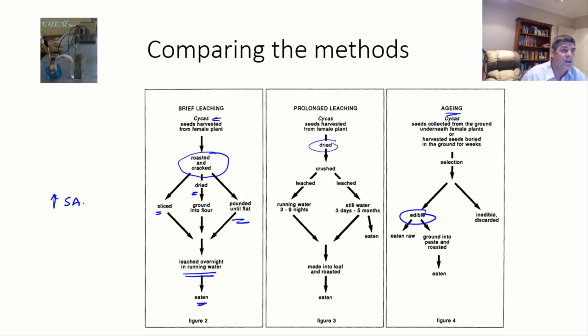So these are three different methods that are applied to ensure that the toxic chemicals that are found inside of the cycad seeds are removed and so that they are then safe for human consumption. Each of these is relying, not so much the third one, but certainly the first two is relying on the fact that we can enable reactions to occur over long periods of time or at least chemical processes to occur over long periods of times if we can have a solid substance that will dissolve in water and if we can continue to ensure that that substance continues to leach out of the seeds.